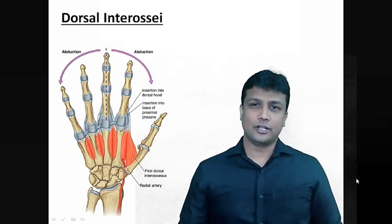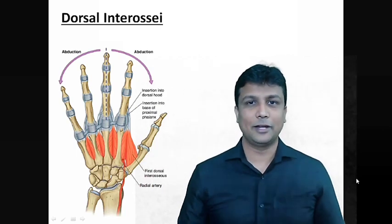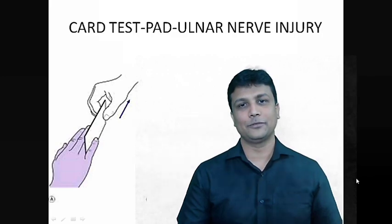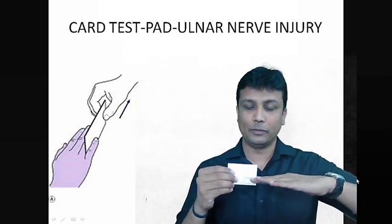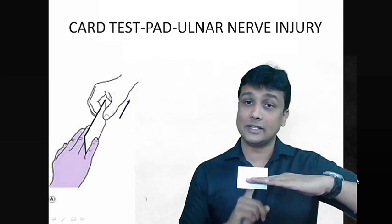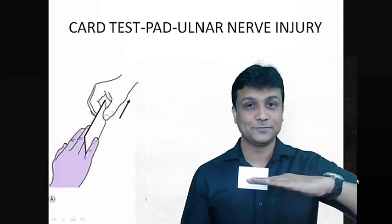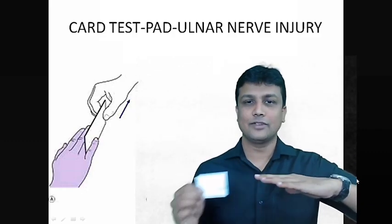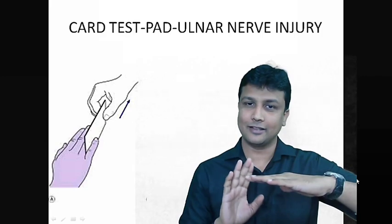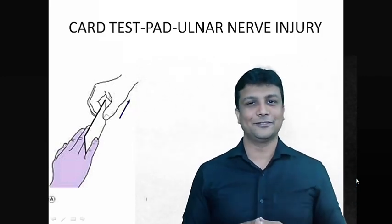All interossei, whether palmar or dorsal, are supplied by the ulnar nerve. In the CARD test, if I give a card to a person and they can hold it between the fingers, the interossei are working well and the ulnar nerve is intact. If they cannot hold the card, the interossei muscles are affected and the ulnar nerve is damaged.